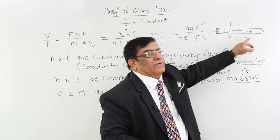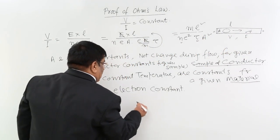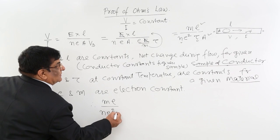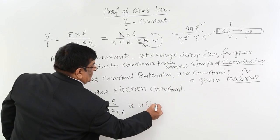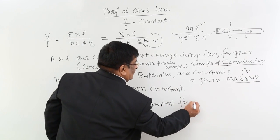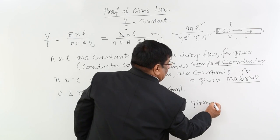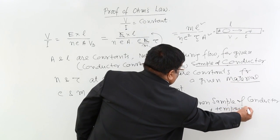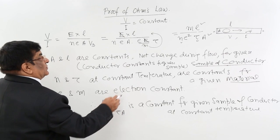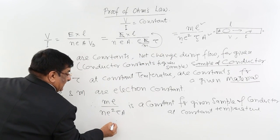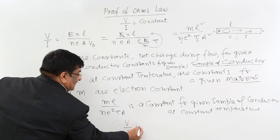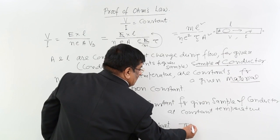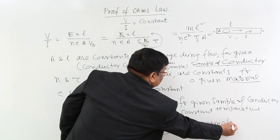All quantities in the expression are constants for a given conductor. So the whole expression M·L upon N·e²·tau·A is a constant for a given sample of conductor. Therefore, since this equals V upon I, we conclude that V upon I is a constant. And if V upon I is constant, this is Ohm's law. Hence proved.